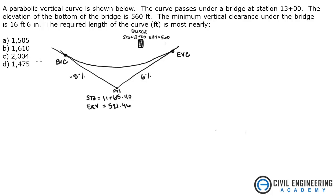There are the answer choices. So we're given this vertical curve. We have point BVC, and the tangent goes down to PVI with a minus 5% grade, and a 6% grade up to point EVC. Here's our bridge, and we were told it was at station 13 plus 00, and the bottom elevation is at 560 feet. We're also given the stationing at PVI and the elevation at PVI.